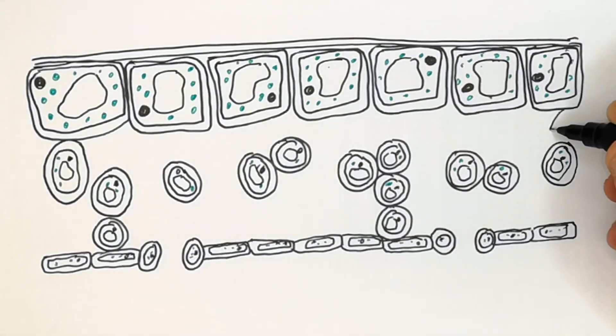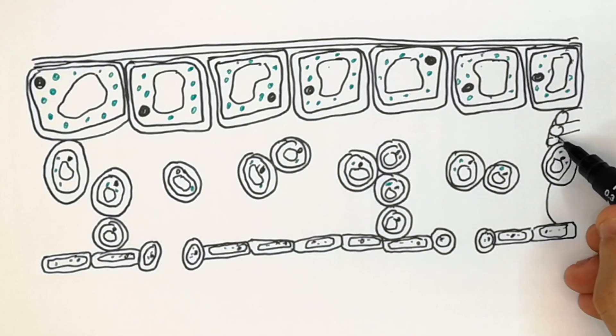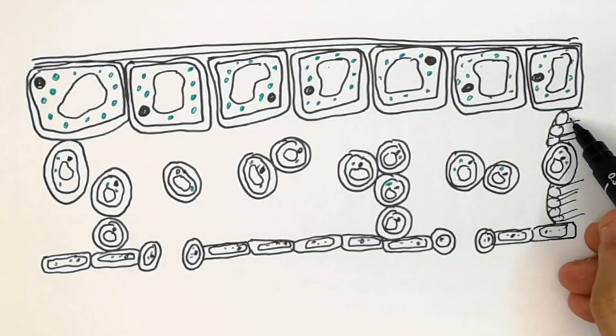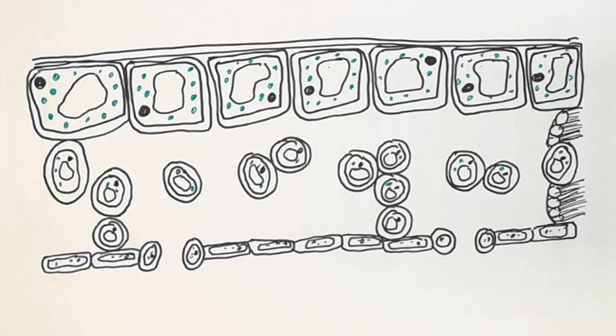These tubes here are known as the xylem and the phloem. These supply the leaf with water and take sugar away from the leaf.